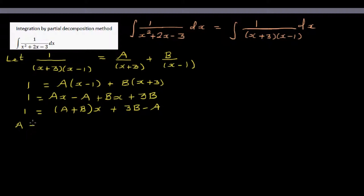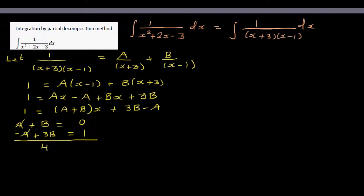Since there is no x term on the left, we get two equations: A plus B equals zero, and minus A plus 3B equals 1. Adding these gives 4B equals 1, so B equals 1/4. Since A plus B equals zero, A must be negative 1/4.